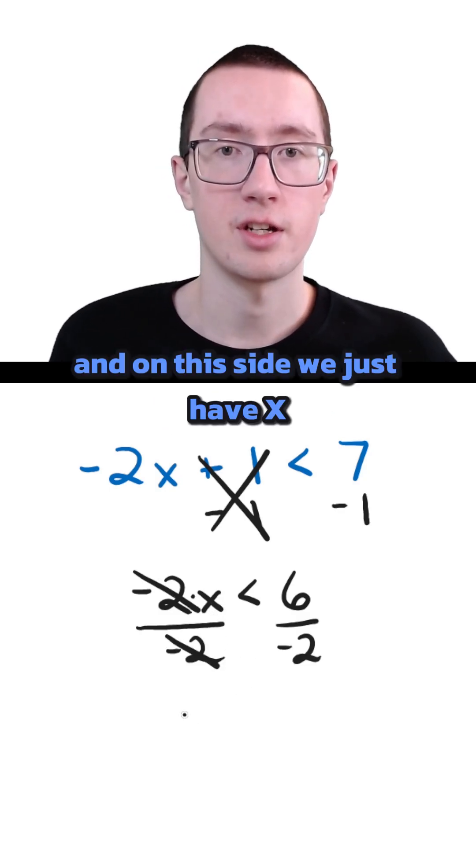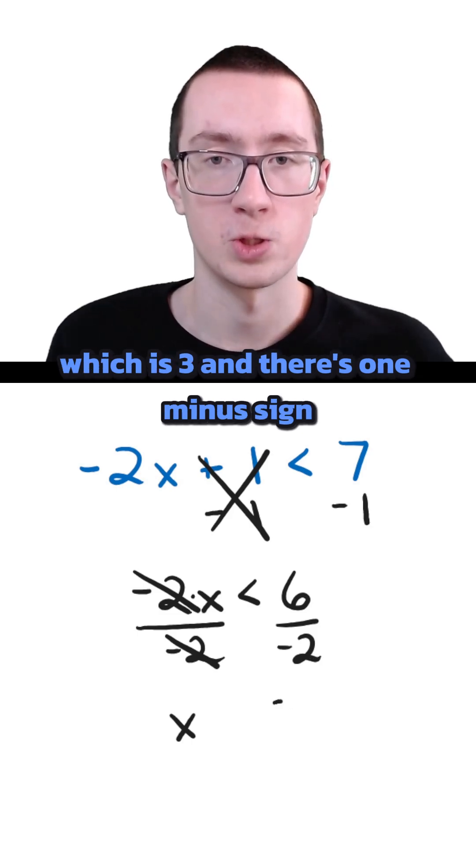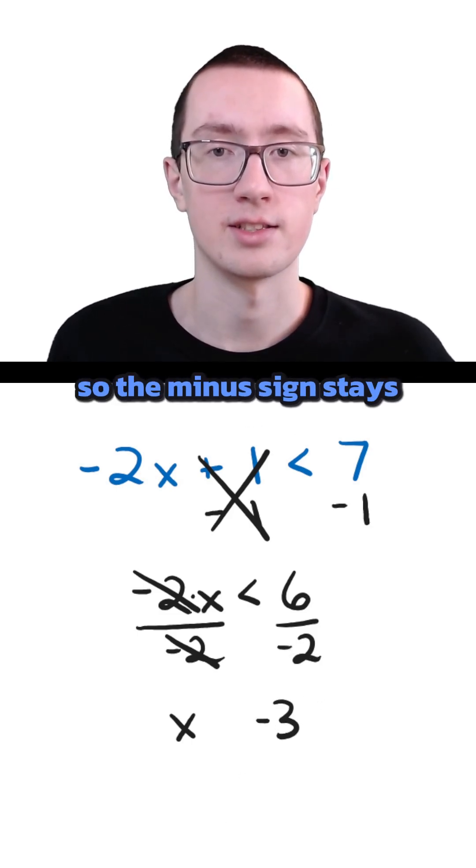These cancel, and on this side we just have x. On the other side, we have 6 divided by 2, which is 3, and there's one minus sign, so the minus sign stays.